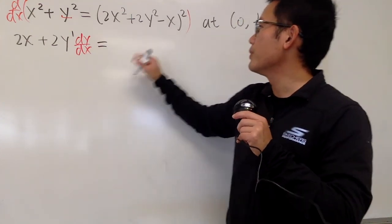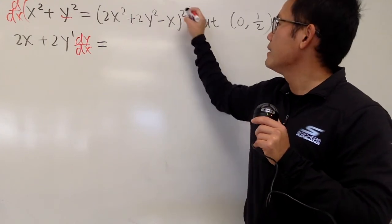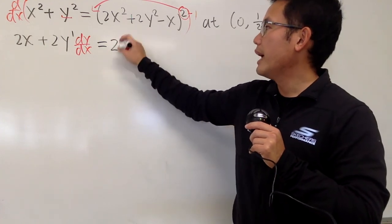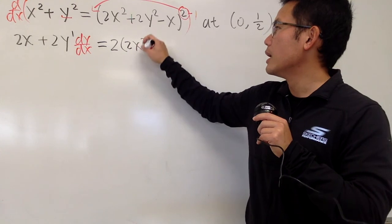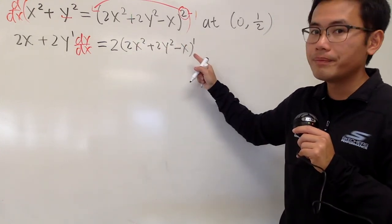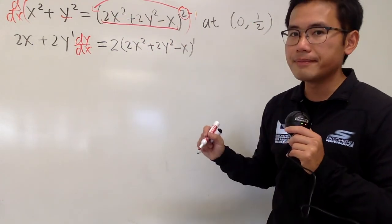This is equal to, well, we have this quantity to the second power, bring the 2 to the front, and then minus 1, like this. So we have 2, and the inside stays the same right here. We have 2x squared plus 2y squared minus x raised to the first power. But, the chain rule says we have to multiply by the derivative of the inside.